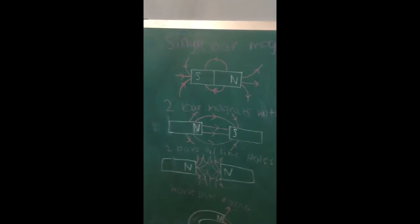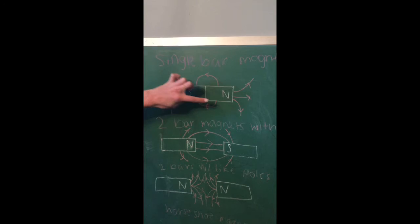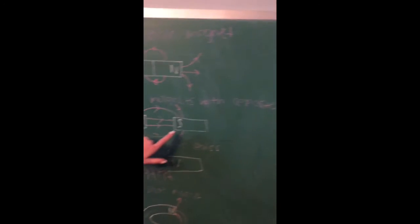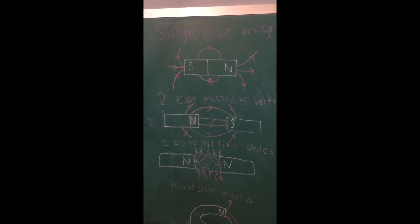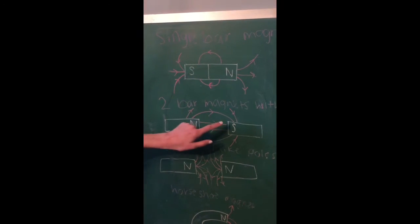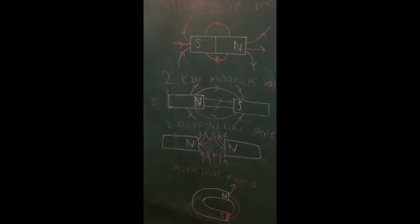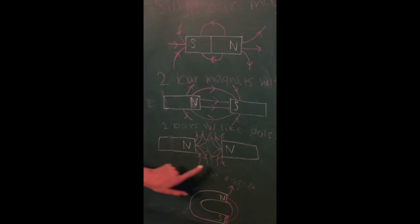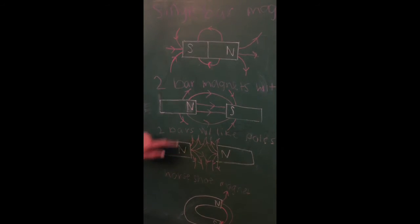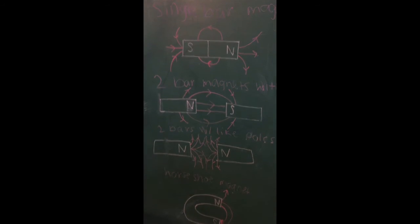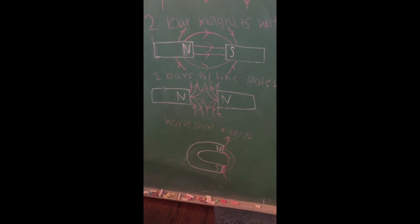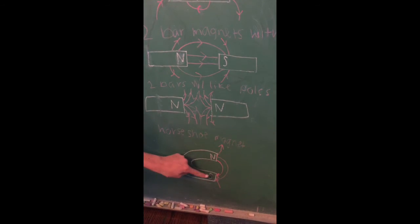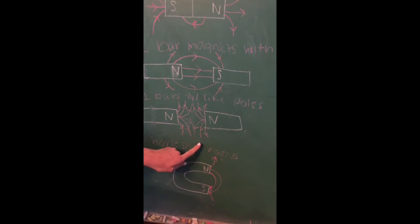Similarly, with the two bar magnets with opposite poles, the arrows are always pointing south. For the two bars with like poles, such as this with the two north poles, the arrows are always pointing away from the other magnet. And for the horseshoe magnet, the arrows are always pointing south. And for the north, the other ones are going out.